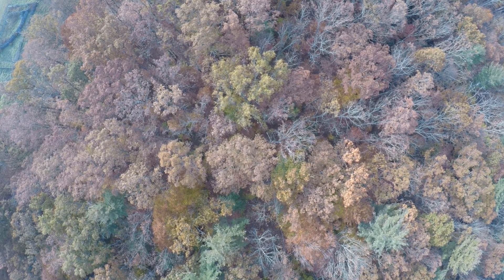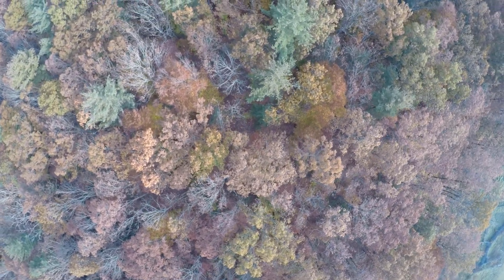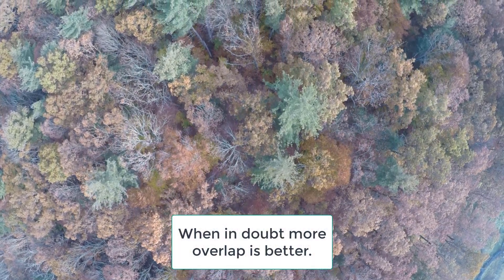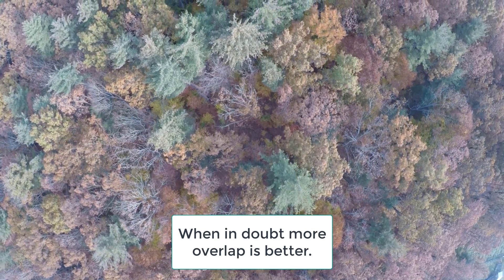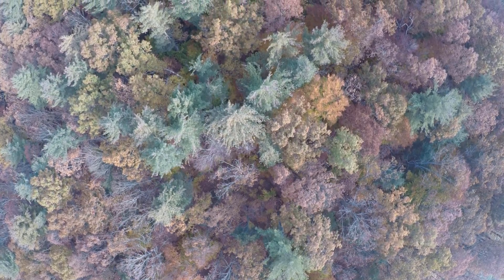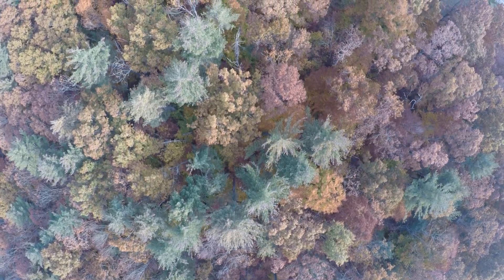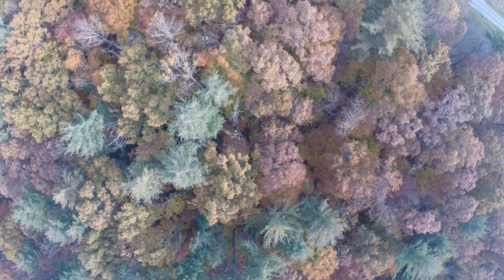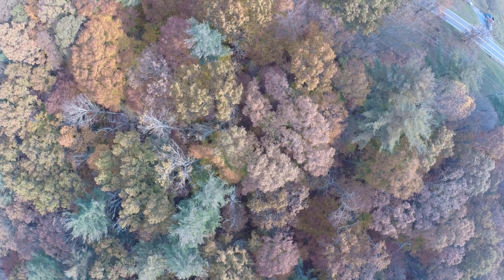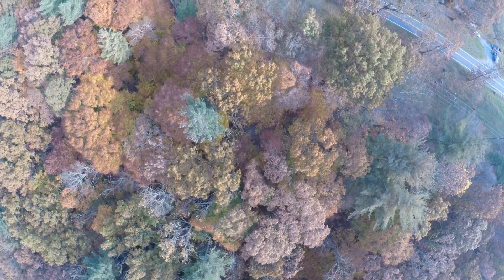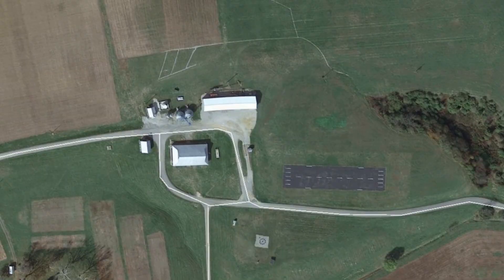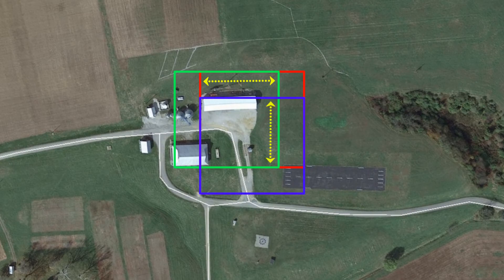This is due to how the post-processing software works. With very low texture environments, the processing software has trouble finding key points it can identify across multiple images, or it finds false key points that aren't actually the same point because everything looks the same. High texture environments like forests pose a slightly different problem — there are so many potential key points that processing software has trouble telling the difference between a good key point and noise, such as key points found on branches swaying in the wind. Ideally, we would want an 85% front-to-back and side-to-side overlap when mapping something like a forest. However, increasing overlap also takes much longer to fly the same area, which can mean multiple flights, increasing both time and cost of a mapping mission.